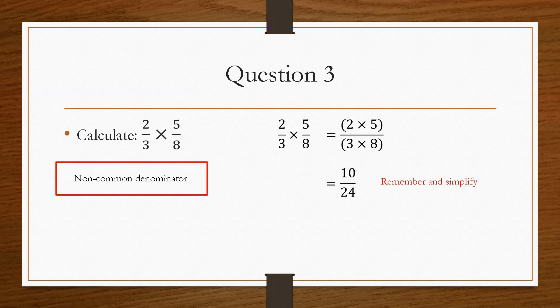Now, if you left this in the exam, and in the exam it asks for it in its simplest form, you would lose the final mark. So you always need to make sure that you can simplify it where possible. And in this case, we can divide the top and the bottom by 2 to give us a final answer of 5 over 12.